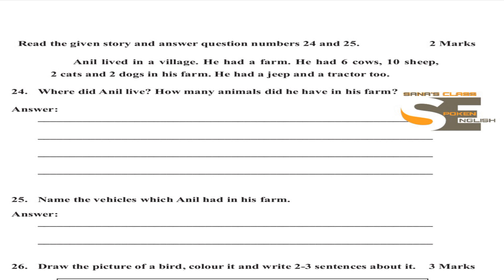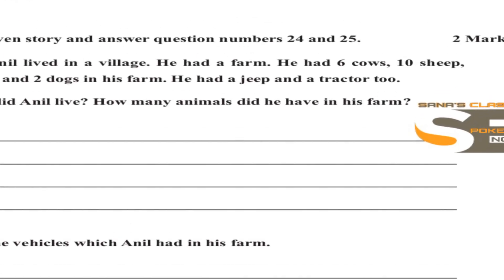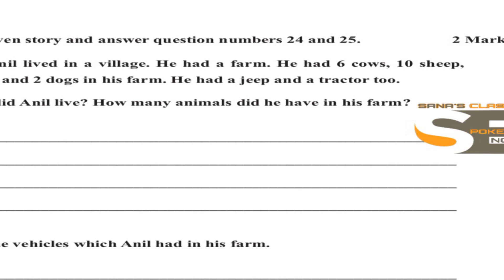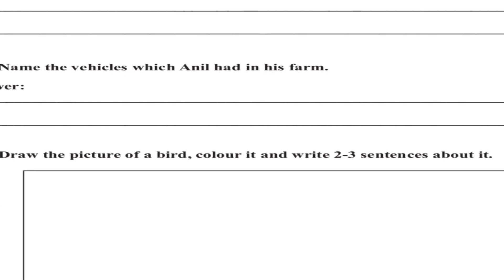Question 24: Where did Anil live? In the story it says 'Anil lived in a village.' Question 25: How many animals did he have in his farm? Six cows, ten sheep, two cats and two dogs — that is 20 animals in total. For the vehicles question, you can write: 'Anil had a jeep and a tractor in his farm.'